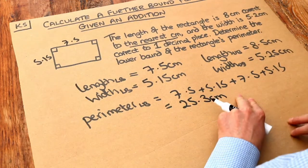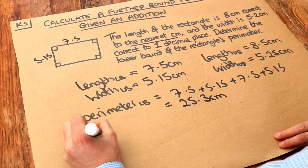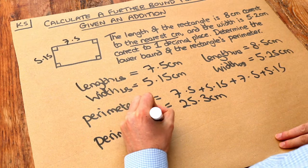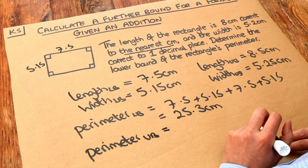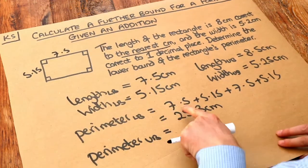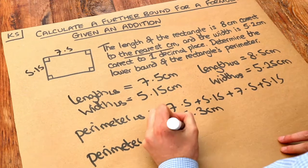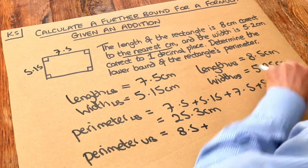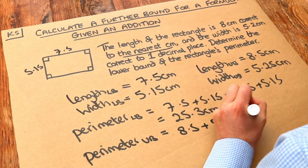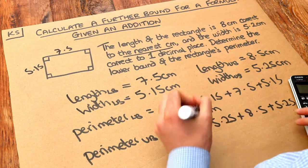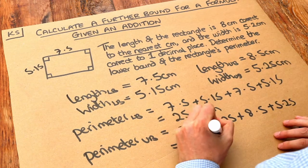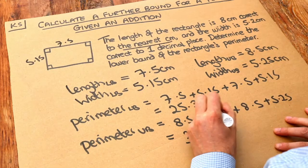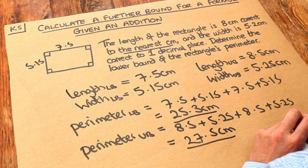Although it doesn't ask for it, we could also find the upper bound of the perimeter. To get the biggest possible value, we add all the largest possible lengths. So instead of 7.5 we use 8.5, and instead of 5.15 we use the biggest possible value of 5.25. Adding those together gives 27.5 centimetres — that's the largest the perimeter could possibly have been, while 25.3 was the smallest.